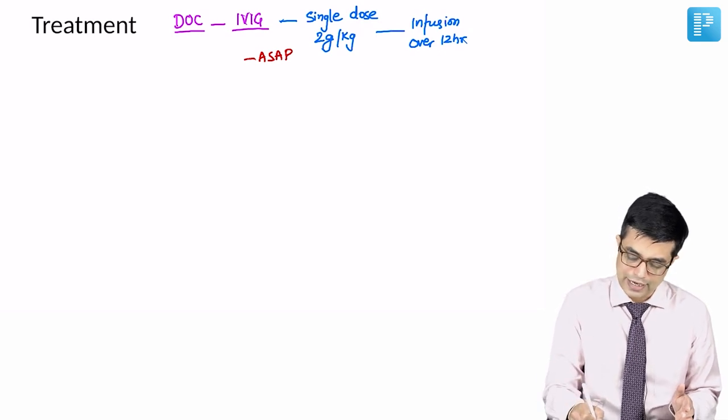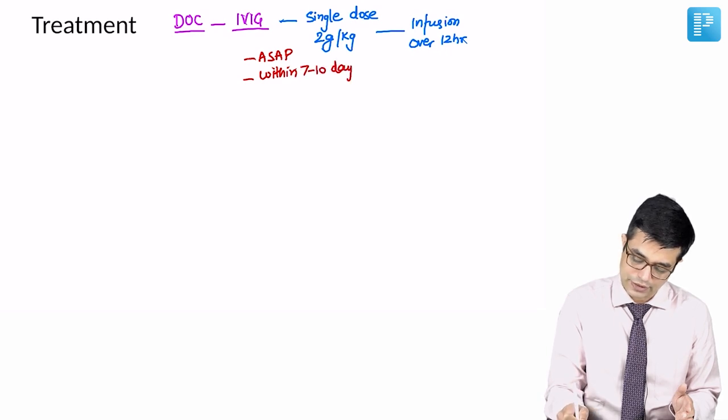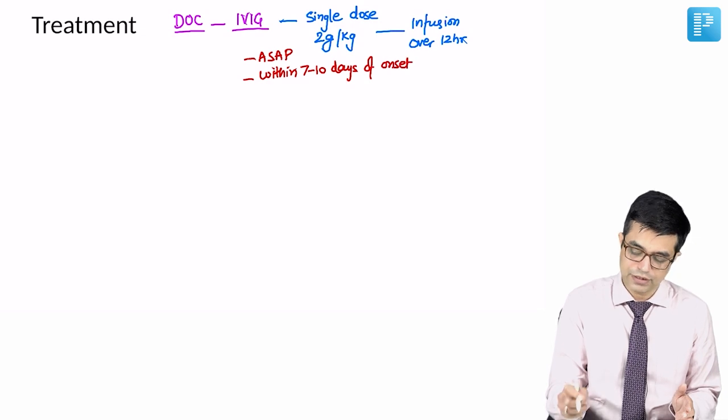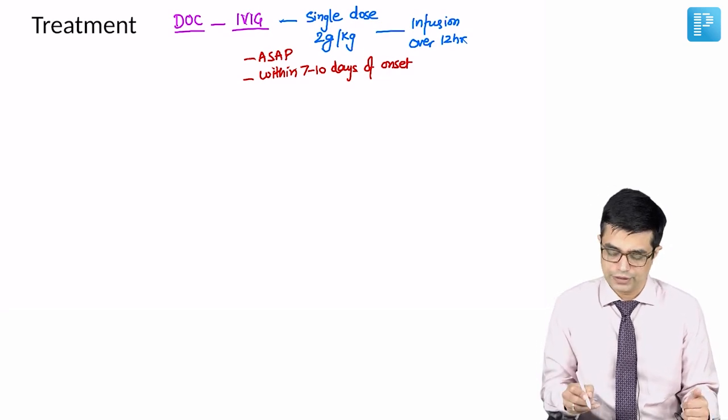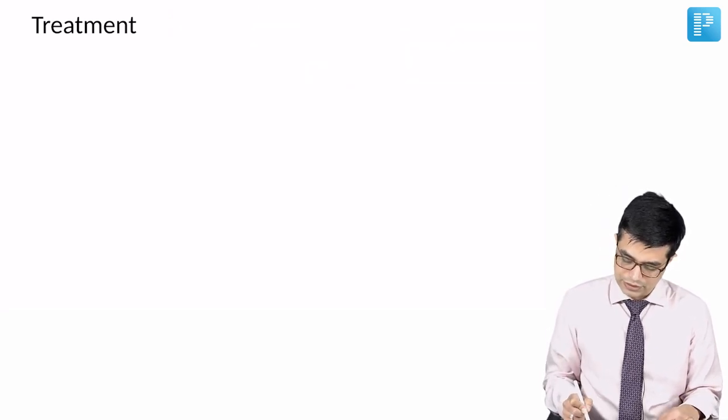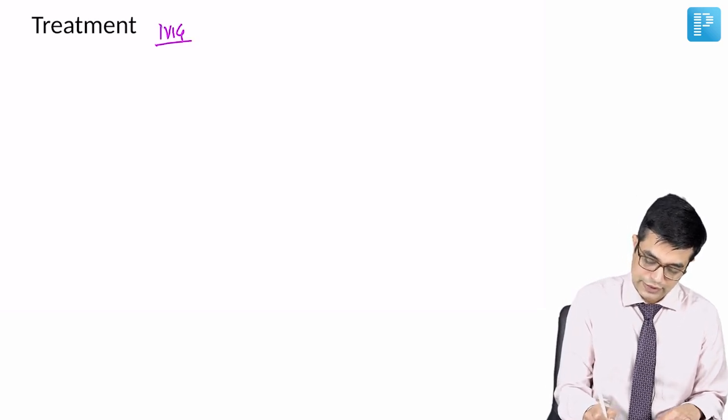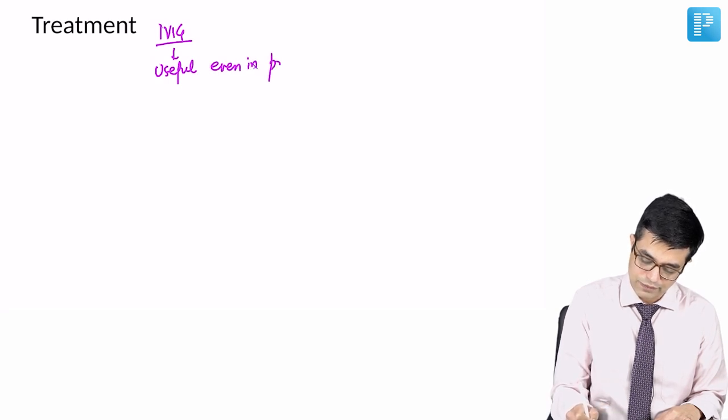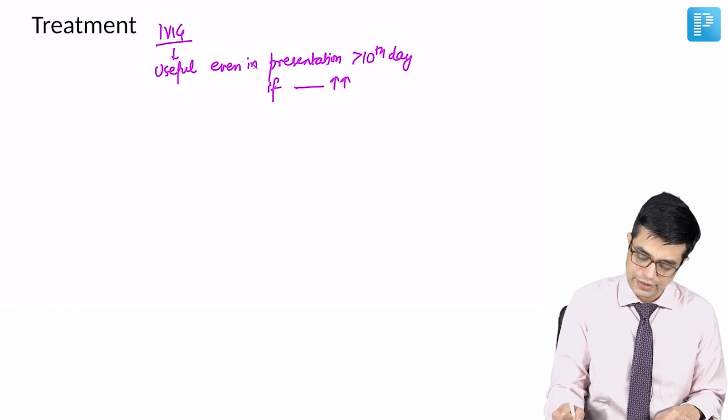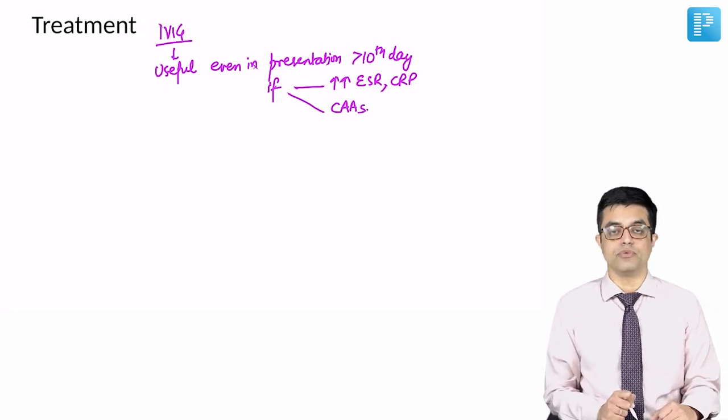ASAP simply means as soon as possible. And practically, it should be given within 7 to 10 days of disease onset. Fever when it comes, then only we say it is onset of the disease. So, within 7 to 10 days of onset of disease or onset of fever. It can be useful, remember that IVIG can be useful even in presentation beyond 10th day, if the patient has very high ESR and CRP or if the patient has developed coronary artery aneurysms.